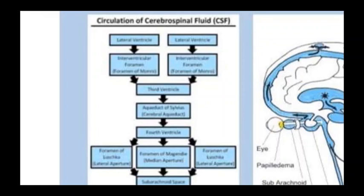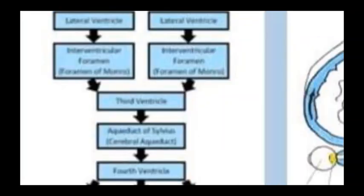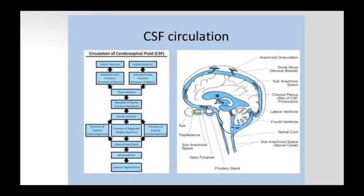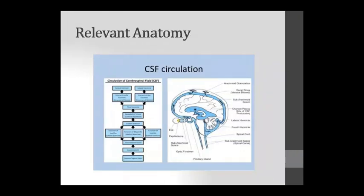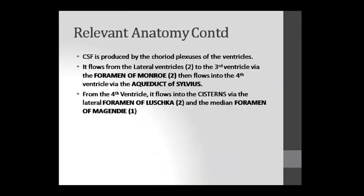CSF travels from the lateral ventricles — this has been explained in physiology, which you have already studied. CSF is produced in the choroid plexus of the ventricles. As shown in this chart, CSF originates from the choroid plexus.